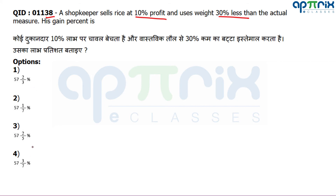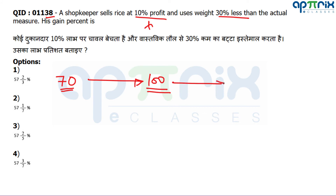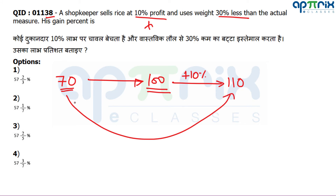Question number 38: Gain percentage — a standard question. When the seller says 100 grams, he's actually giving only 70 grams (30% less). If cost price is 1 rupee per gram, actual cost is 70 rupees. But he charges for 100 grams normally. Additionally, he already has a 10% markup profit. So he charges 110 rupees. Profit = 110 − 70 = 40 rupees on CP of 70 rupees.